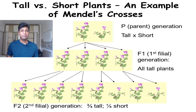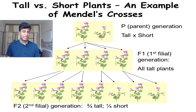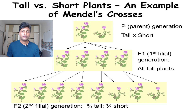Mendel performed certain cross pollinations with the garden pea plant. The scientific name of this plant is Pisum sativum. When he performed cross pollination between garden pea plants, he got certain observations. In this particular slide you can see a cross done between a tall and a dwarf garden pea plant.